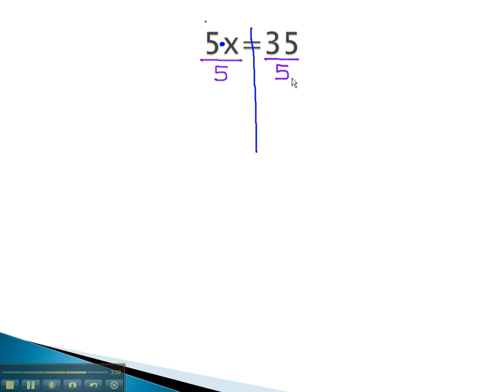The 5's divide out, and we are just left with x equals 35 fifths, or 7. This is what x equals in the equation.